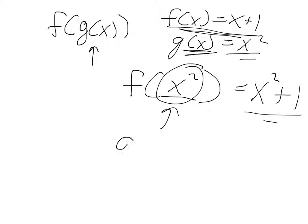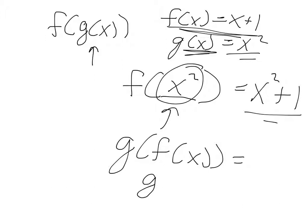If it asks you the other way — g of f of x — you do the same thing. You write g, and then f of x is x plus 1, so g of x plus 1. And then g is x squared, so you plug in x plus 1 for x and get x plus 1 squared.